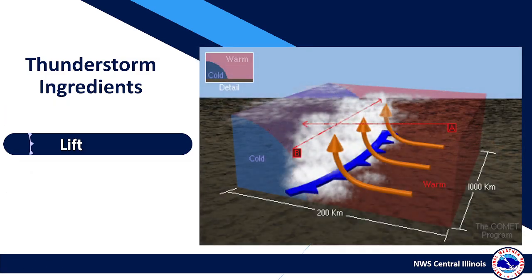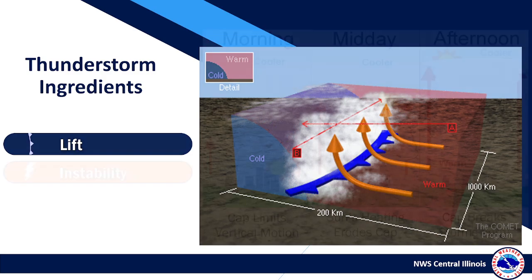First off, thunderstorms need a way for air particles to be lifted. Fronts, outflow boundaries from other storms, daytime heating, and the jet stream are all ways the air can be lifted.